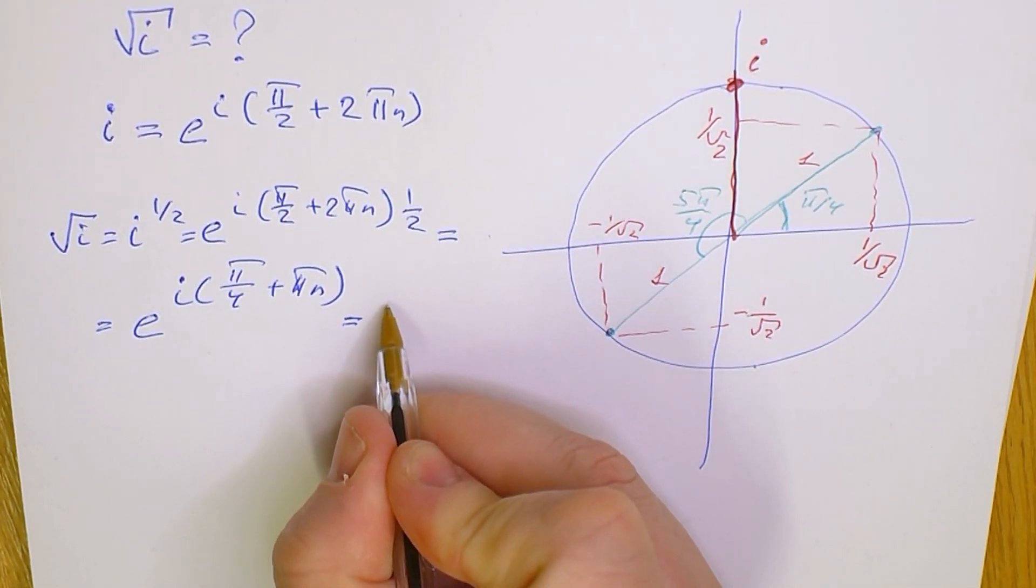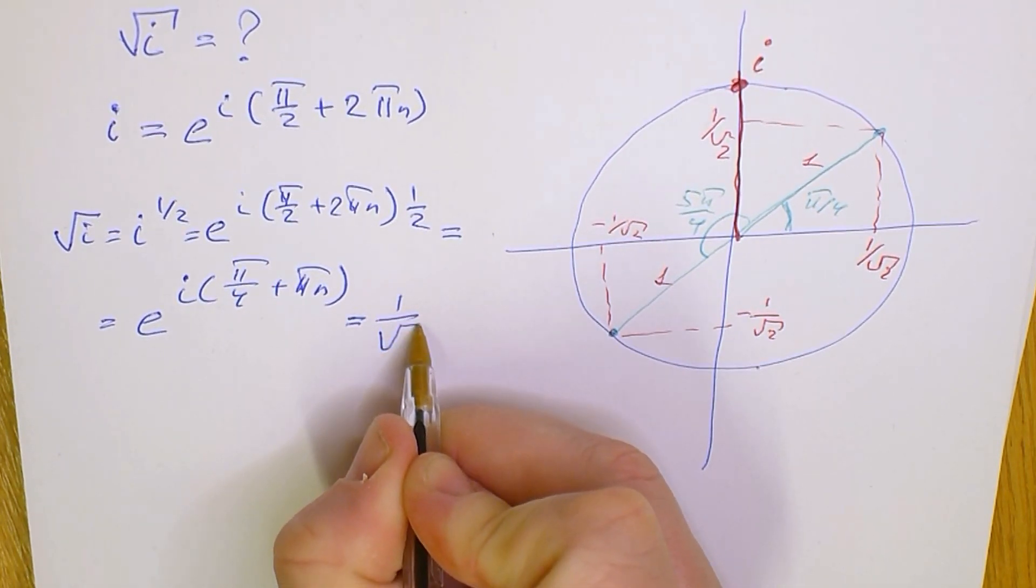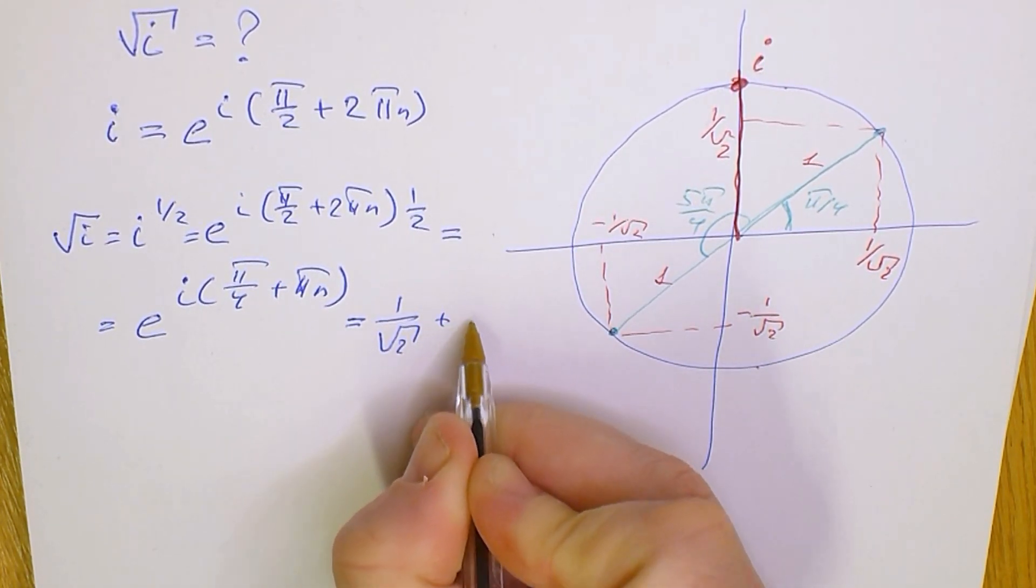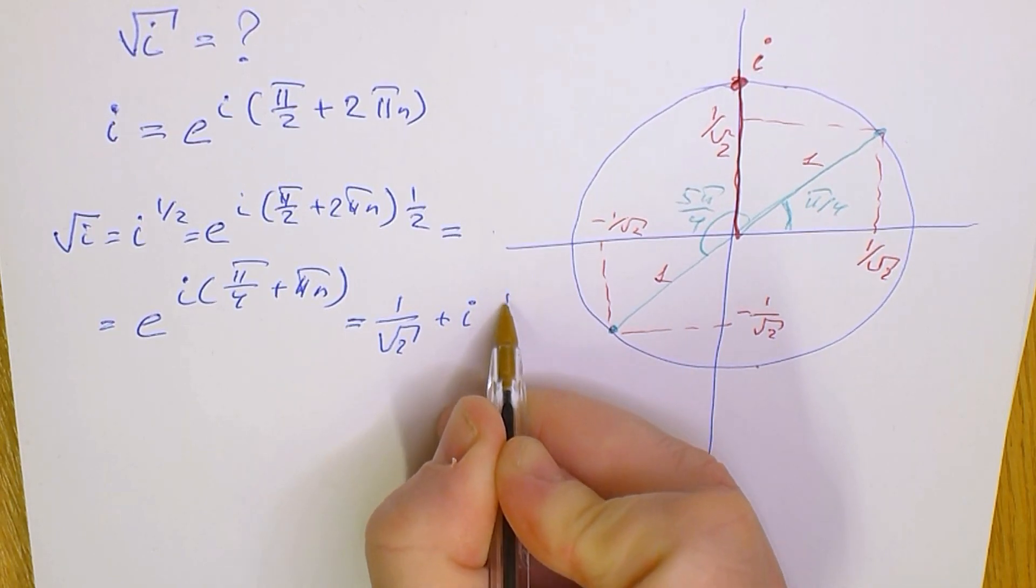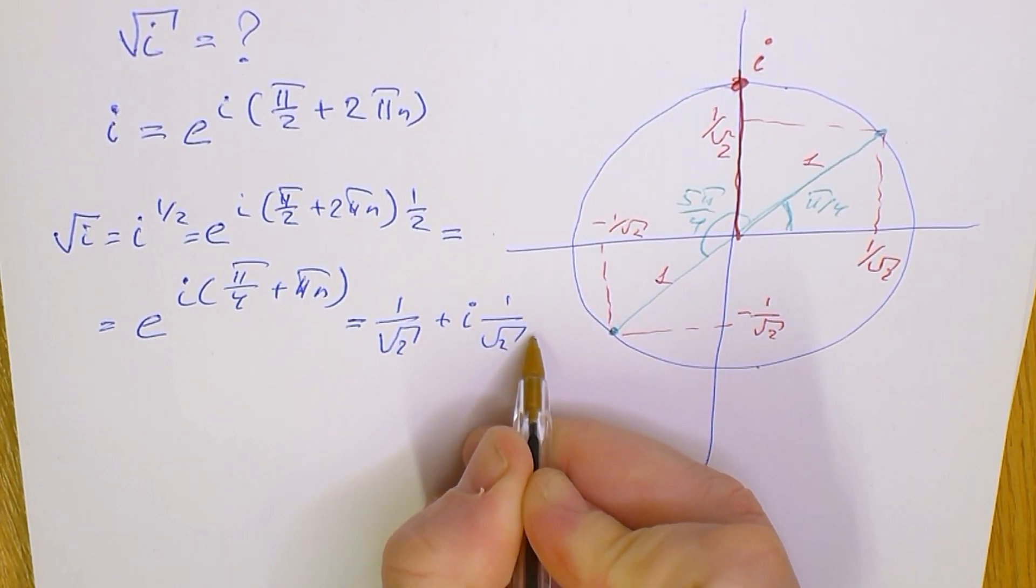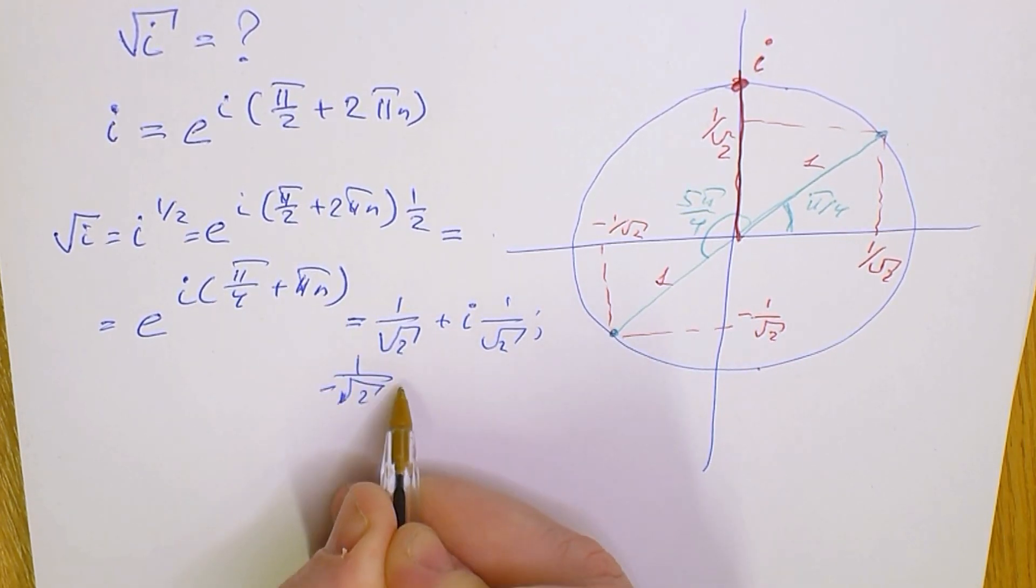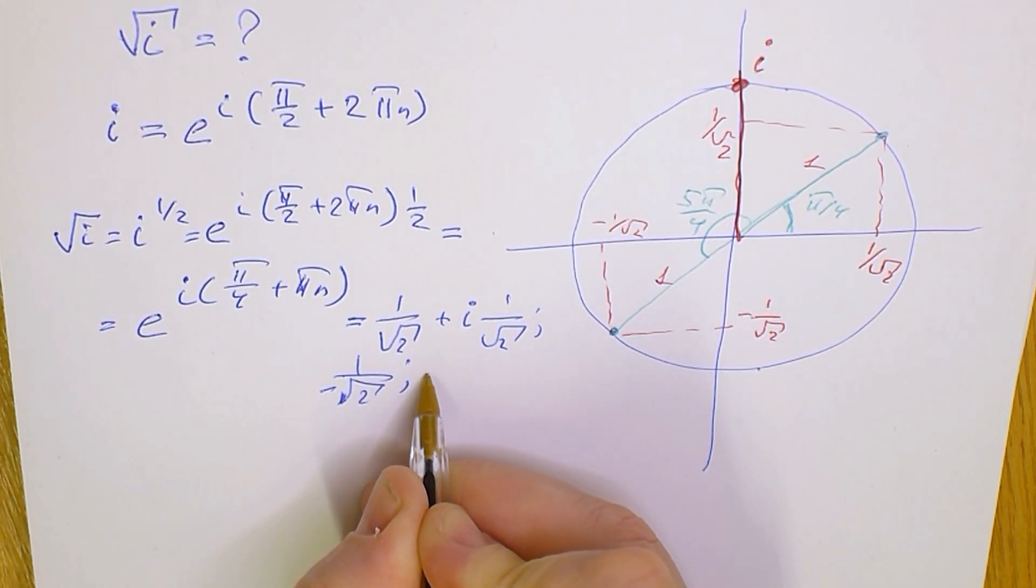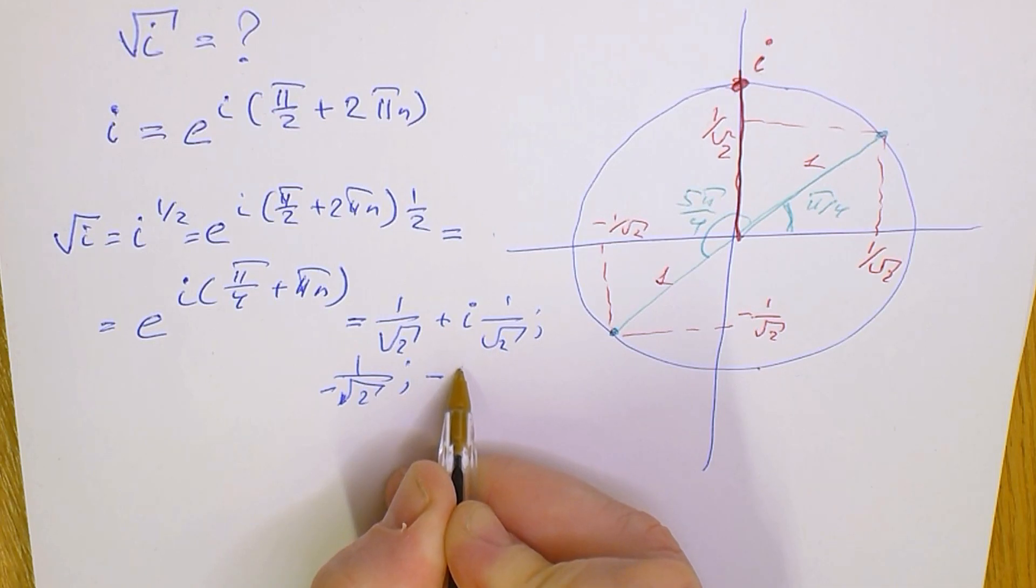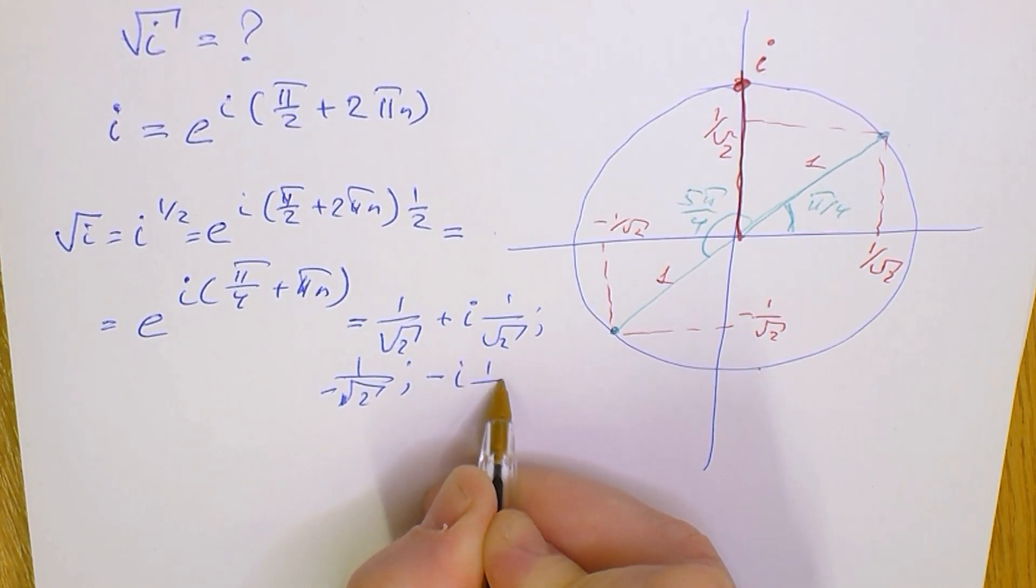We can write the final result. The first coordinate will be 1 divided by square root of 2 plus i divided by square root of 2. The second answer is minus 1 divided by square root of 2 minus i divided by square root of 2.